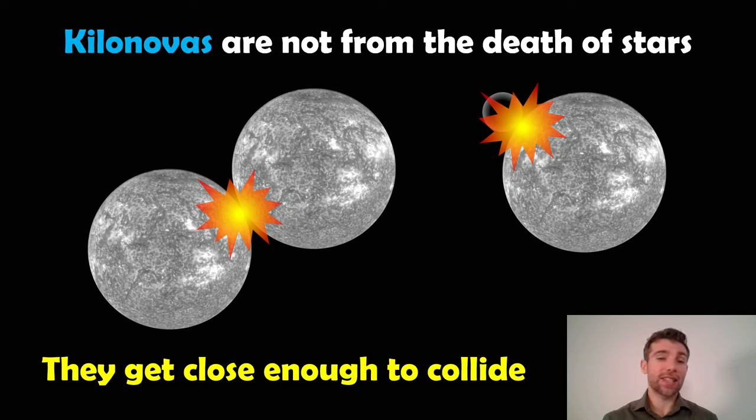That collision is the kilonova. The explosion we detect is the collision of either two neutron stars or a black hole and neutron star, which we would classify or call it a merger, not a collision, we call it a merger.